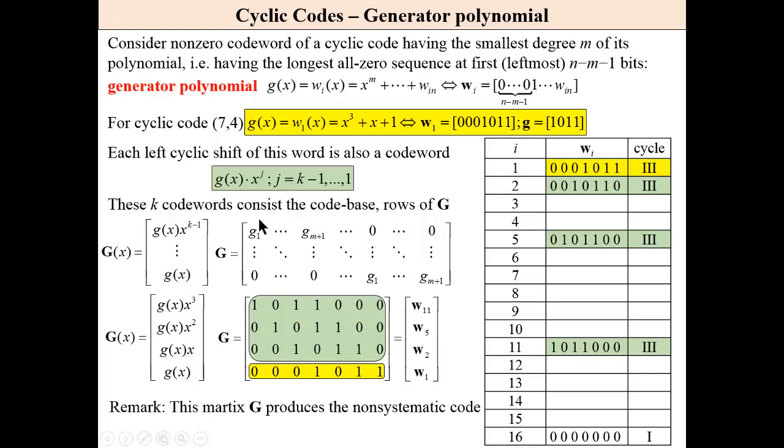This is generator polynomial at the left, this is generator polynomial at the right, and all zeros are here. For this code, we have then the following generator matrix. This is generator polynomial shifted to the right, then one bit to the left, two bits and three bits to the left.